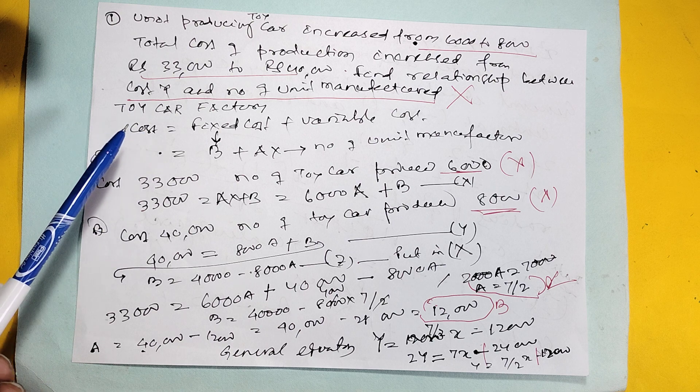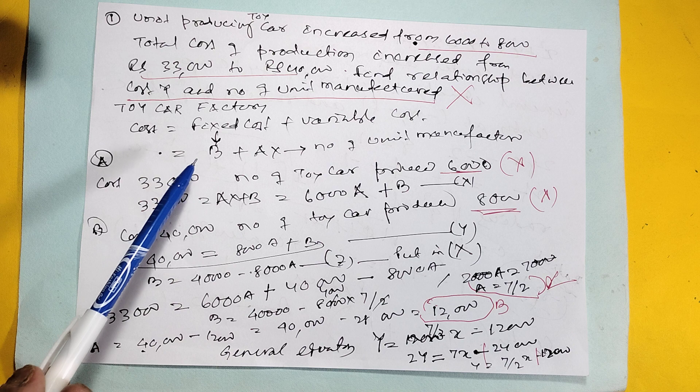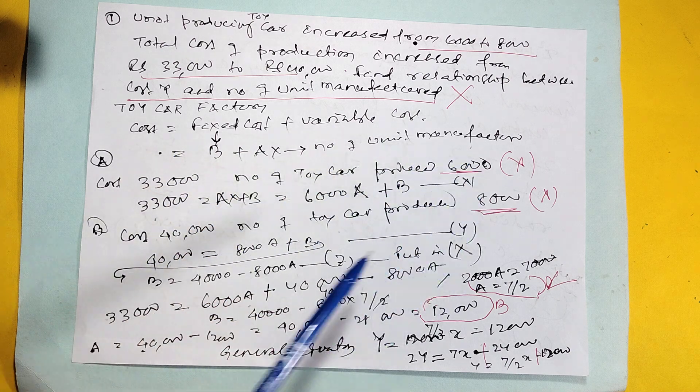That is, the cost is equal to fixed cost plus variable cost. So B is the fixed cost, variable cost is AX, where X is the number of units manufactured.